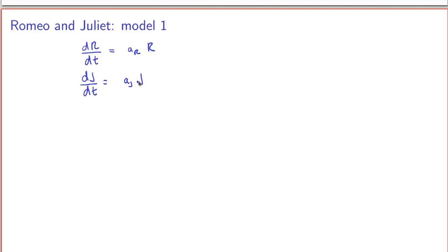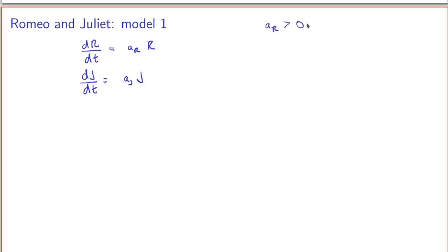We want to understand the behavior of the solutions — how does Romeo and Juliet's love evolve in time? We have to distinguish between two cases depending on the signs of the coefficients. Looking at Romeo's equation first: if the coefficient is positive, when the right-hand side is positive — so Romeo is in love — then the rate of change is also positive, so his love increases. This is what we would call a passionate lover, because the more he's in love, the more he's in love, and similarly the more he hates Juliet, the more he hates her.